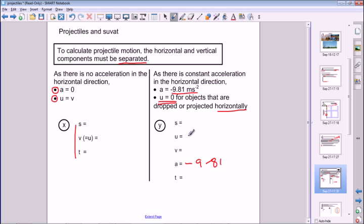In the horizontal direction it's simplified because there's no acceleration. In the vertical direction, the y direction, you need the full five SUVAT quantities in order to calculate the missing quantities that you need.